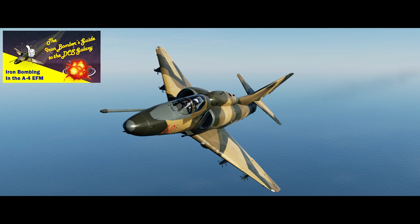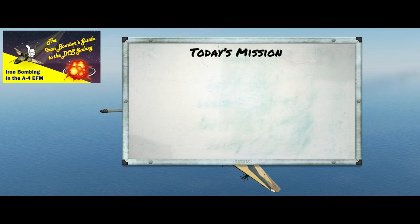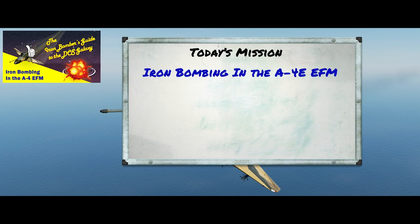We have spent a lot of time in this series flying around in circles in the A4 on the iron bombing range. All of that flying has been done with the SFM, or simple flight model version, because that's the one that's publicly available. But today we're going to fly some patterns in the EFM and see how it compares, and one of the biggest differences will be that the EFM includes the CP-741 bombing computer.